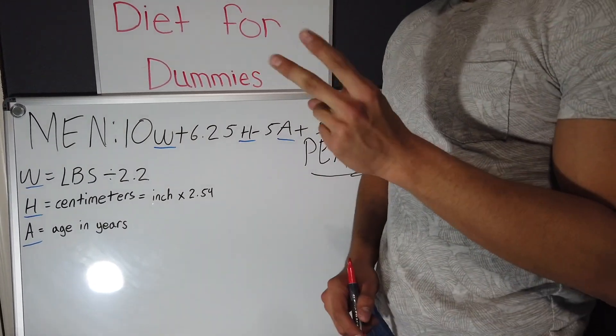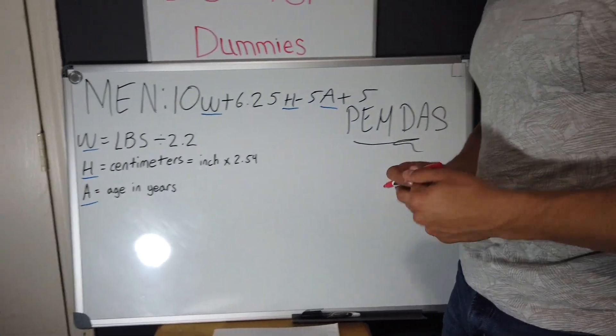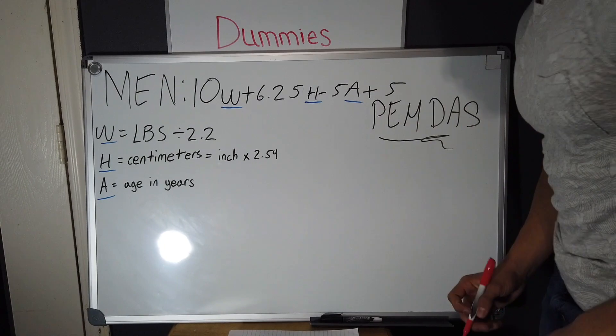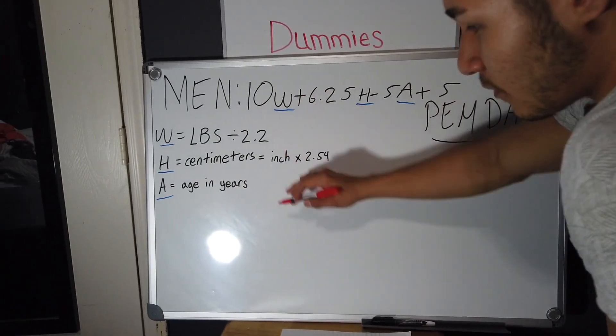So you'll need three things: your height, your weight, and your age. So now I'm gonna be doing the example on myself.